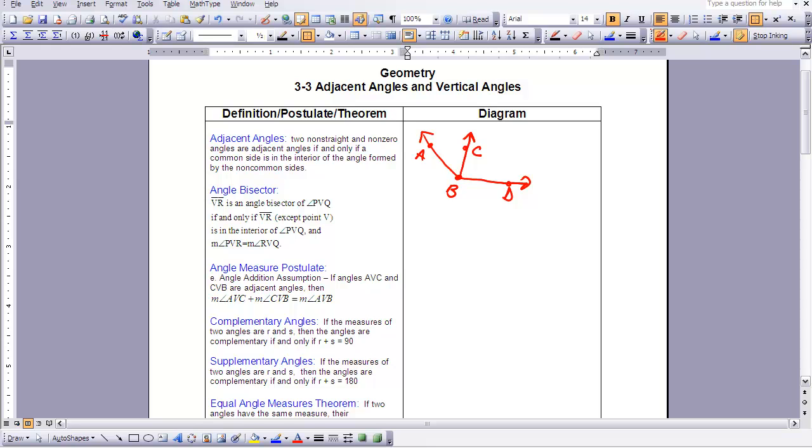The next one that we have is an angle bisector. And you will use angle bisectors when you're working through proofs and when you're drawing conclusions about different statements that are made. So this one's very, very important. You might want to put a little star next to it. Let me draw you a picture of an angle bisector.